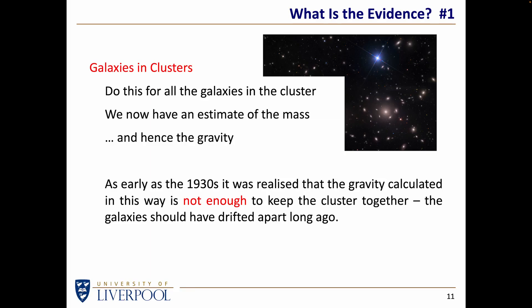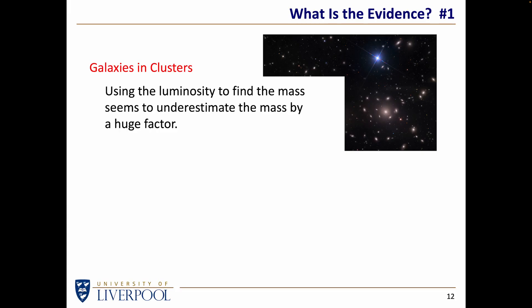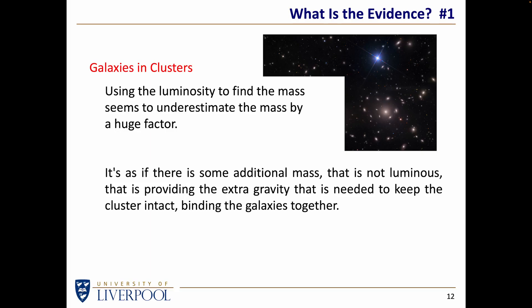From the amount of luminous matter that appears to exist — from all the light we can see from all these galaxies — there simply isn't enough mass to keep this system gravitationally bound. They should have drifted apart a long, long time ago. So it was realised nearly 100 years ago that something is wrong. Originally it was called the missing mass problem. Using the luminosity to find the mass seems to underestimate the mass required to hold the galaxy cluster together — not just by a few percent, but by a factor of two, three, or five. It's as if there is some additional mass that is not luminous, providing the extra gravity needed to keep the cluster intact. What are we going to call this additional mass? Let's call it dark matter.